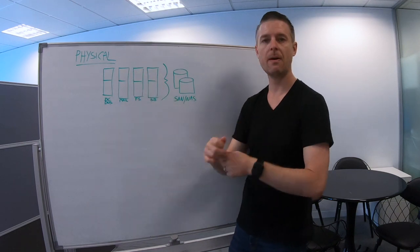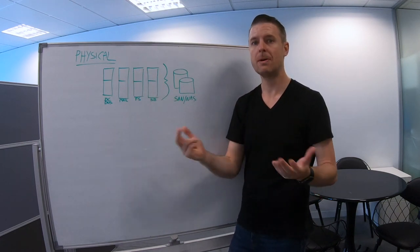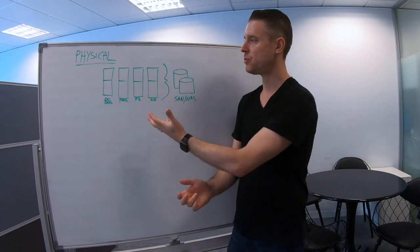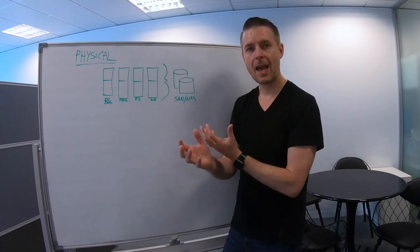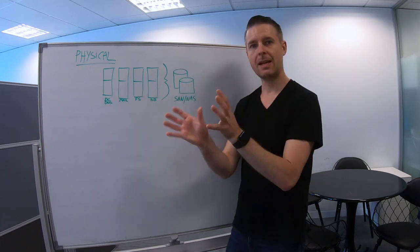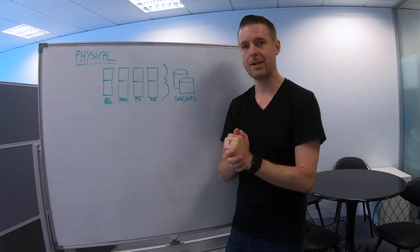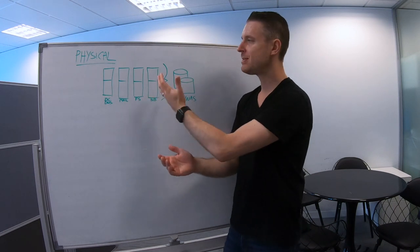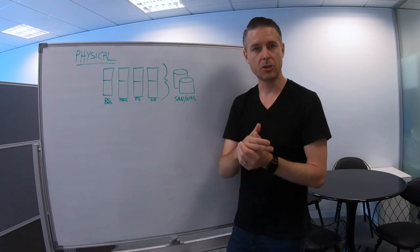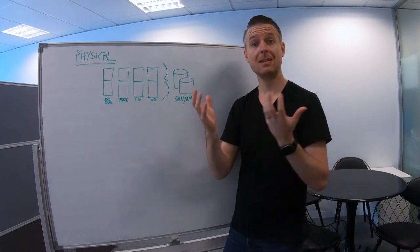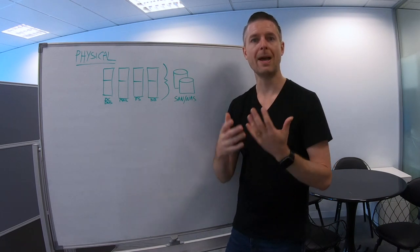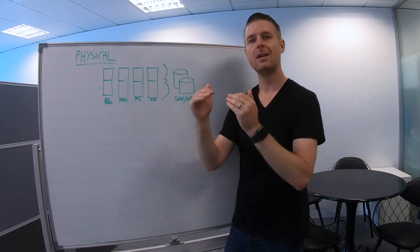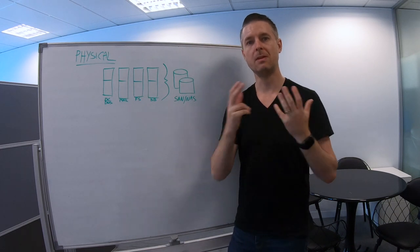If you lose one server, you lose all of the functions on that server. If you lose the mail server, you've lost email, which could be detrimental to the business. The advantage of physical servers is that they are dedicated and you can go in and upgrade them. However, there is no redundancy built in out of the box for physical servers. Considering electricity and physical rack space, these servers have to physically sit somewhere, be powered, and be cooled by air conditioning units — so the cost is generally higher.